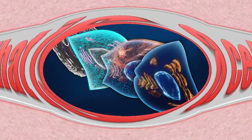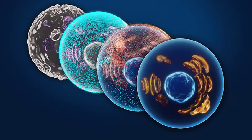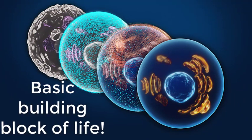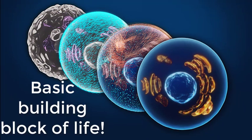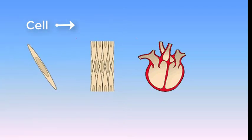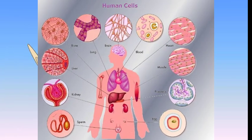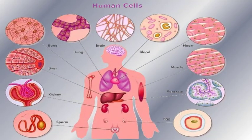What is a cell? A cell is defined as a basic building block of life. Cells club together to form a tissue and so does a tissue to form an organ. Therefore, we are what we are because of these basic units of life called cells.